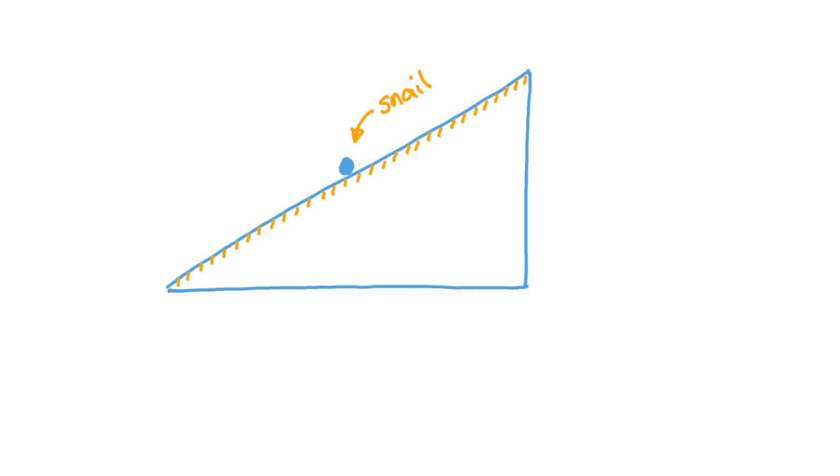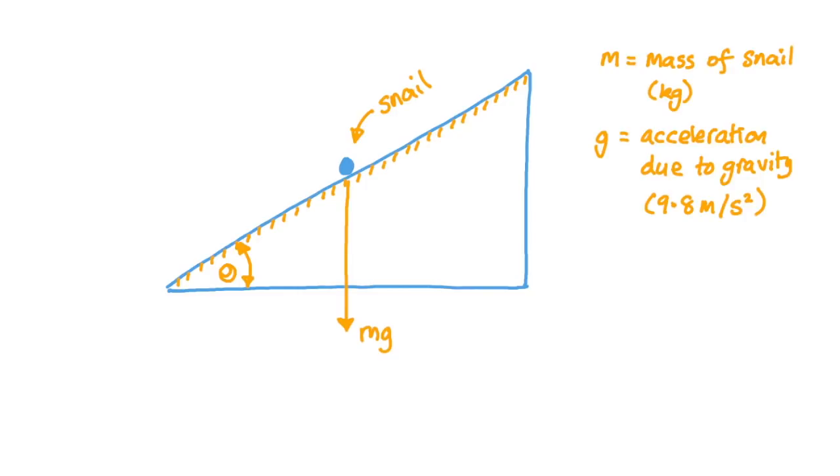We can model the snail as a particle on a rough slope, and that just means that there is some friction between the snail sliding down the slope. Let's call the angle between the slope and the horizontal theta. The weight of the snail acts vertically downwards with a force in newtons equal to its mass in kilograms times the gravitational constant g in meters per second per second, and we usually use a value of 9.8 meters per second squared for the acceleration due to gravity at the Earth's surface.